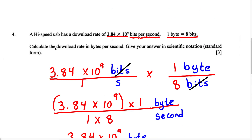So the download rate in bytes is 4.8 times 10 to the power of 8 bytes per second. This is our final answer.